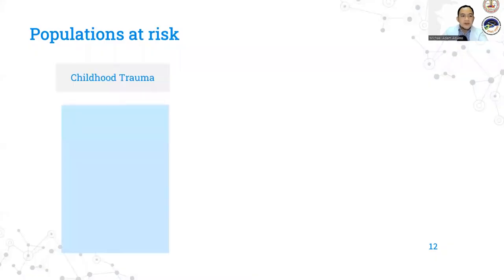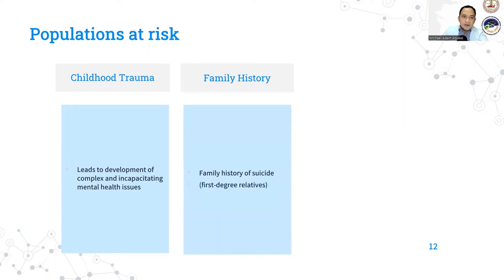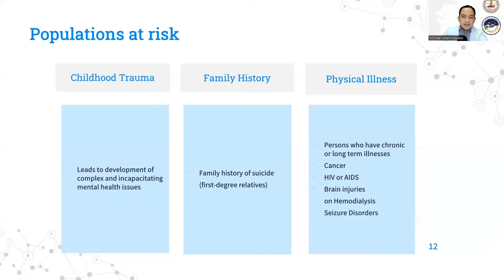Those with a childhood trauma can lead to a development of complex and incapacitating disorders, such as dissociative disorders, personality, eating, substance use, and PTSD. They can also have severe impulsivity, mood liability, and self-injurious behavior. Also, those with a family history of suicide, especially among first-degree relatives, and those with physical illnesses, or persons who have chronic or long-term illnesses, such as cancer, ulcers, lung disorders, HIV or AIDS, Huntington's disease, brain injury, multiple sclerosis, lupus, those who are on hemodialysis, or seizure disorders.